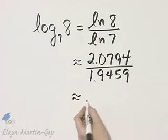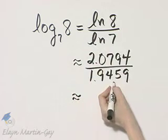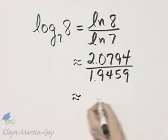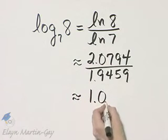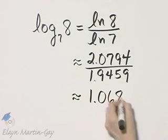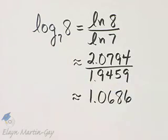That will give you something to work with. You don't need to take this intermediate step, but if you want to see it, there it is. Then go ahead and divide, and it's approximately 1.0686. This is an approximation of the logarithm.